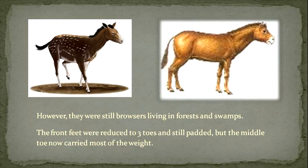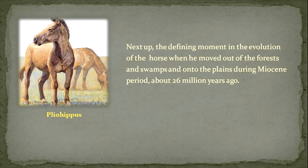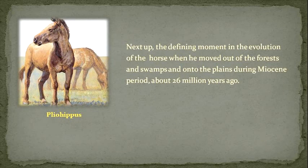However, there were still browsers living in forests and swamps. The front feet were reduced to three toes and still padded, but the middle toe now carried most of the weight. Next up: the defining moment in the evolution of the horse, when he moved out of the forests and swamps and onto the plains during the Miocene period about 26 million years ago.